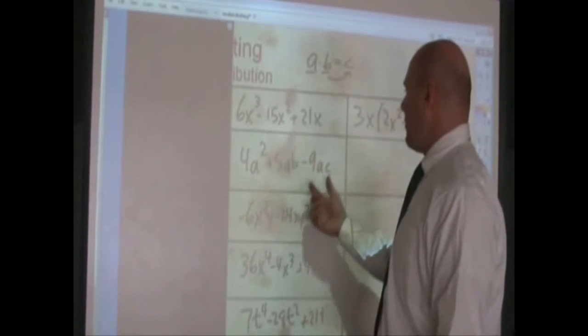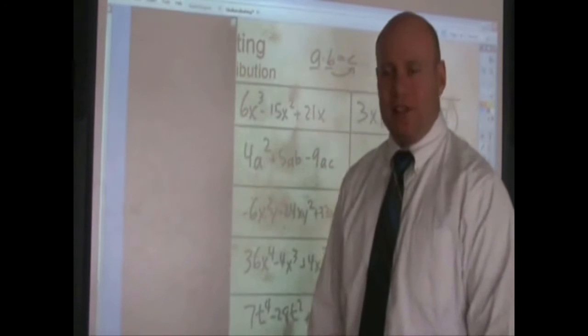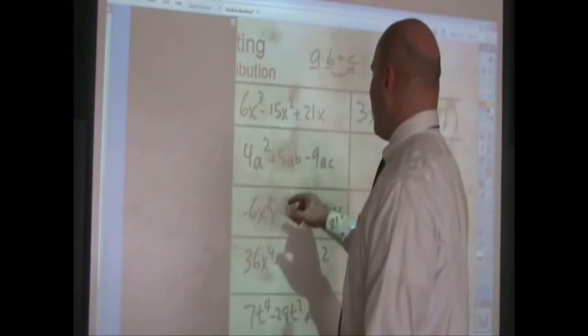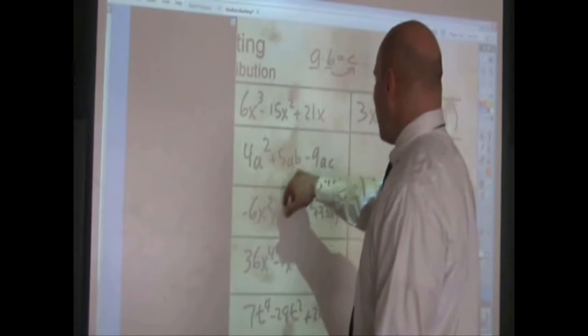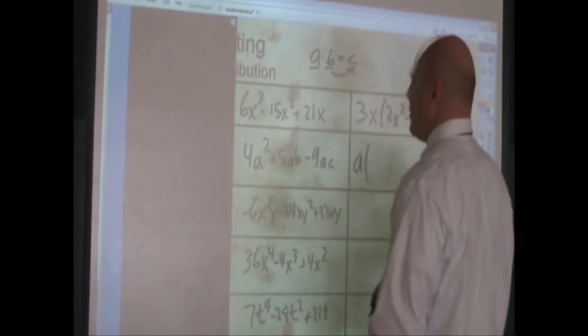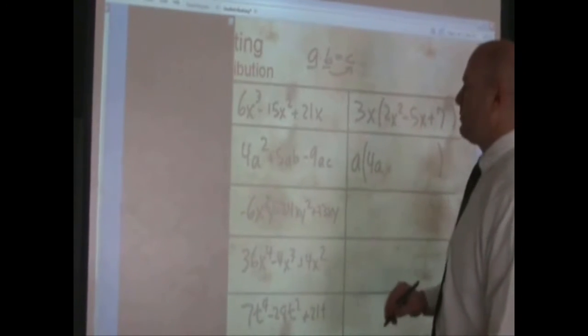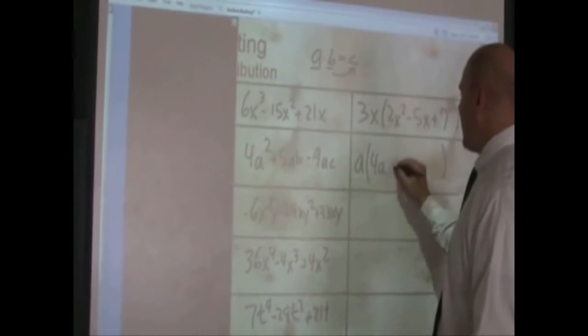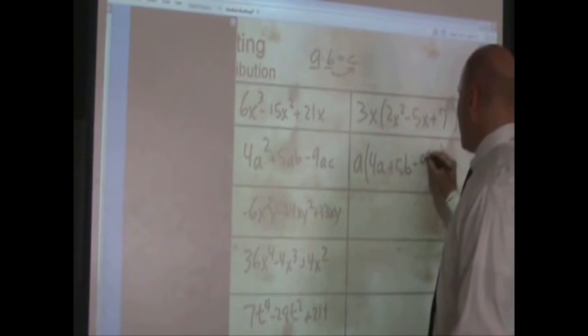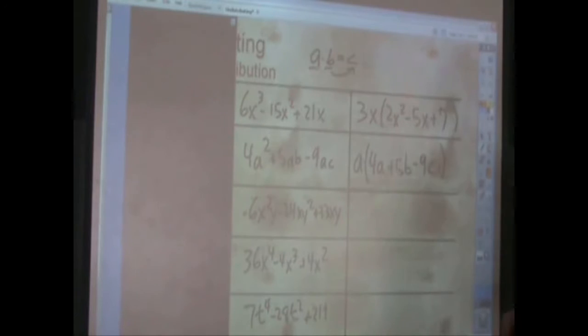Four a squared, five a b, negative nine a c. Four, five, and nine don't have anything common that multiplies to give you those values, so those aren't going to be able to come out. The only thing that's common among the variables, this guy has two a's, an a and a b and an a and a c. The only thing that's common is an a, so I yank out the a. Four a squared divided by a makes four a. Five a b divided by a is five b. And negative nine a c divided by a is negative nine c.